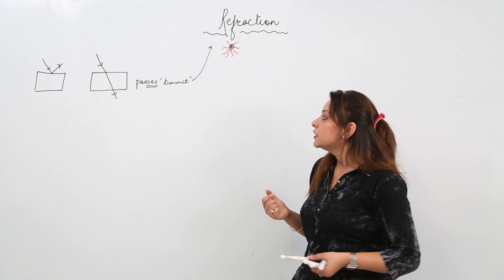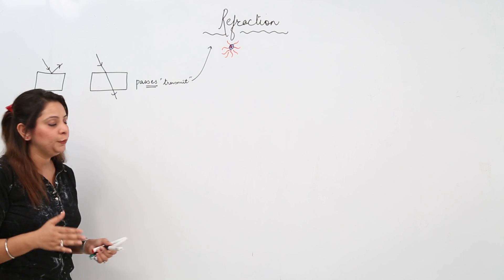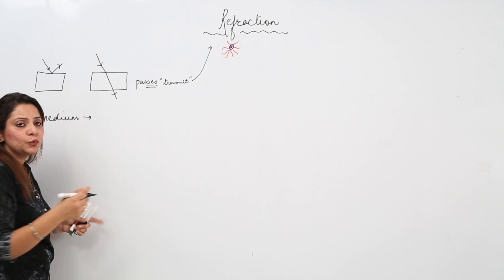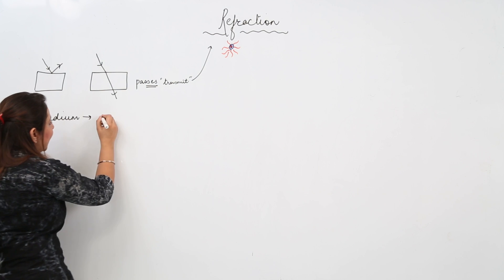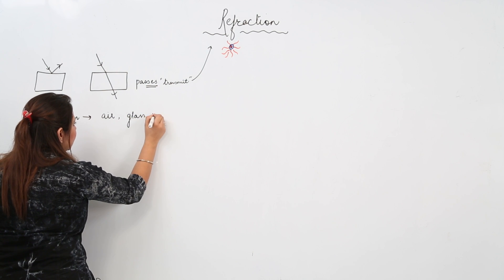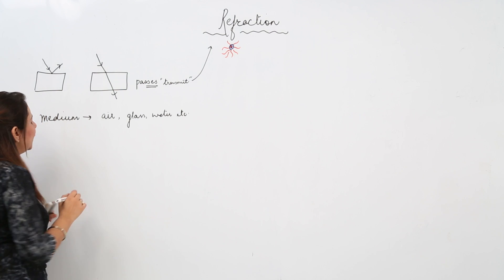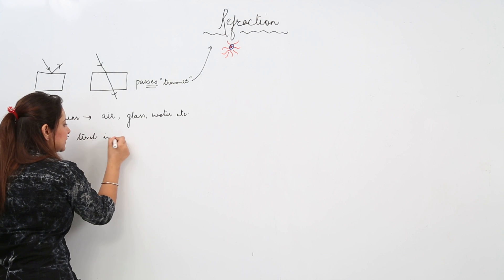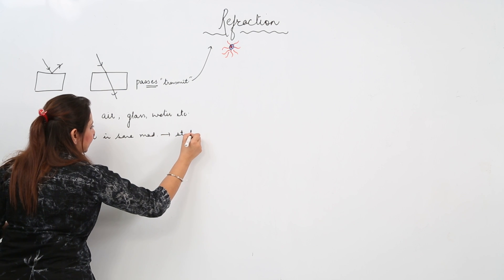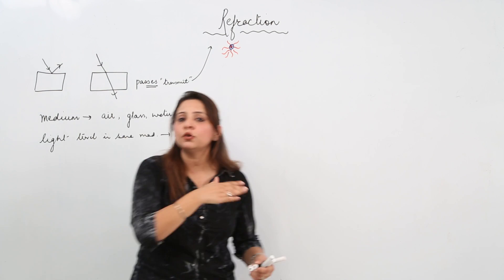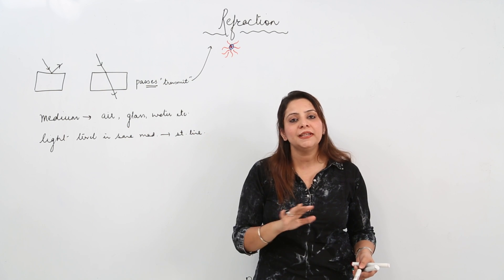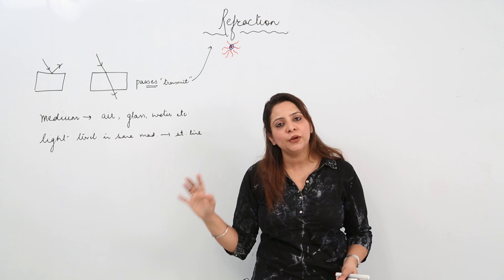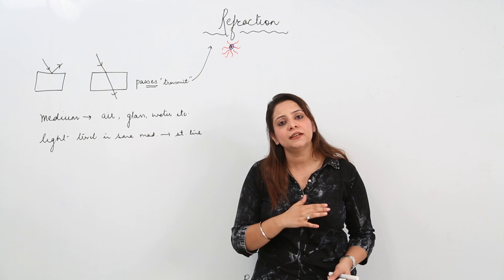Before we start, we need to know about the basics. Whenever light travels in any medium — medium refers to any substance other than vacuum, like air, glass, or water — when light travels in the same medium, its path is a straight line. Whether it passes through air, water, or glass, the path remains straight.